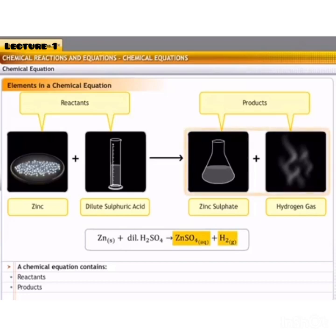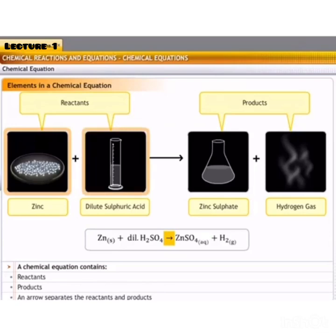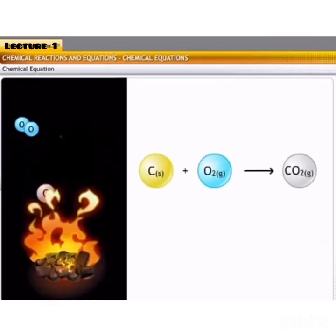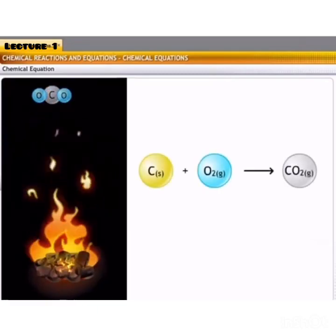And an arrowhead, which points towards the products and tells the direction of the chemical reaction. As in this reaction, it is showing that zinc reacts with dilute sulphuric acid to form zinc sulphate and hydrogen gas. So, the arrowhead is showing the direction. Let us take another example.